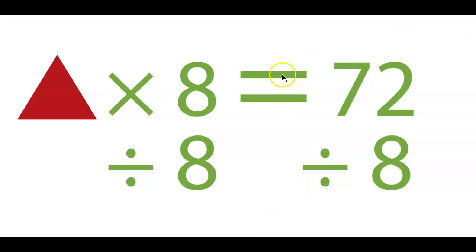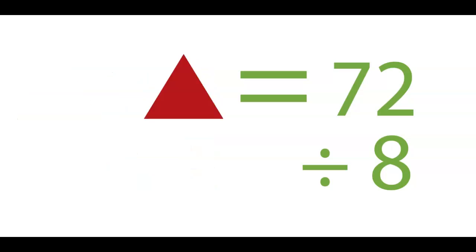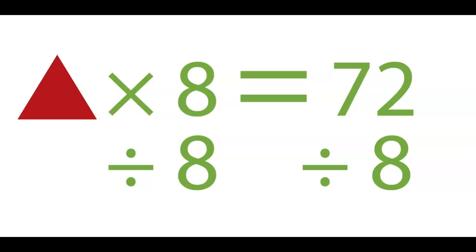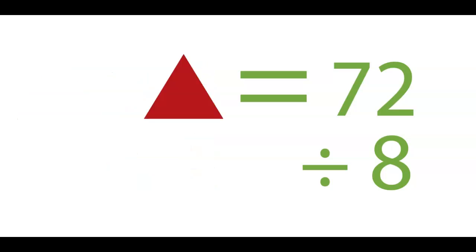And same idea as before, that times 8 divided by 8 is going to simplify into nothing, right? It's going to cancel itself out, doing and undoing. So we are left with what we originally started with, which was that triangle. And then, obviously, 72 divided by 8 equals 9. That's the idea, right? But the key point here being this doing and undoing portion.